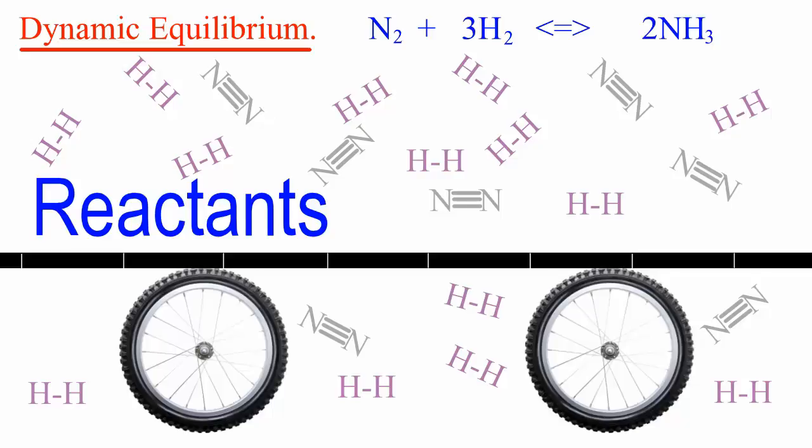Two analogies or visualizations to show what's happening in a dynamic equilibrium. First, the conveyor belt analogy.